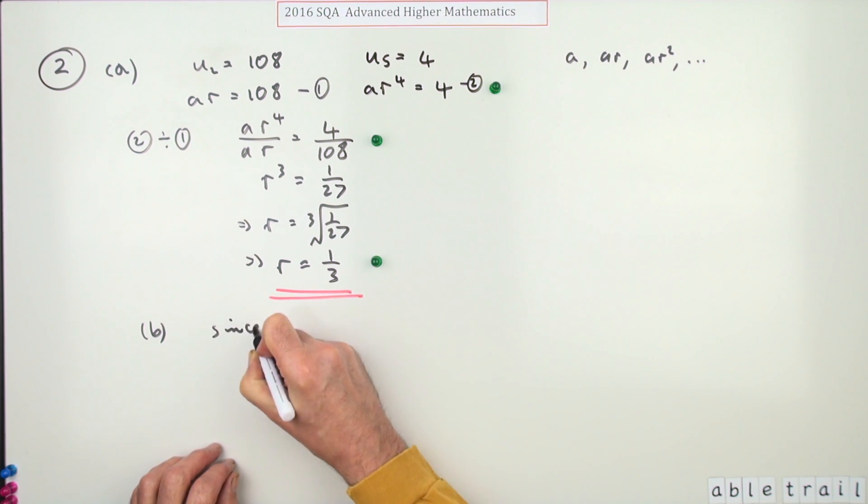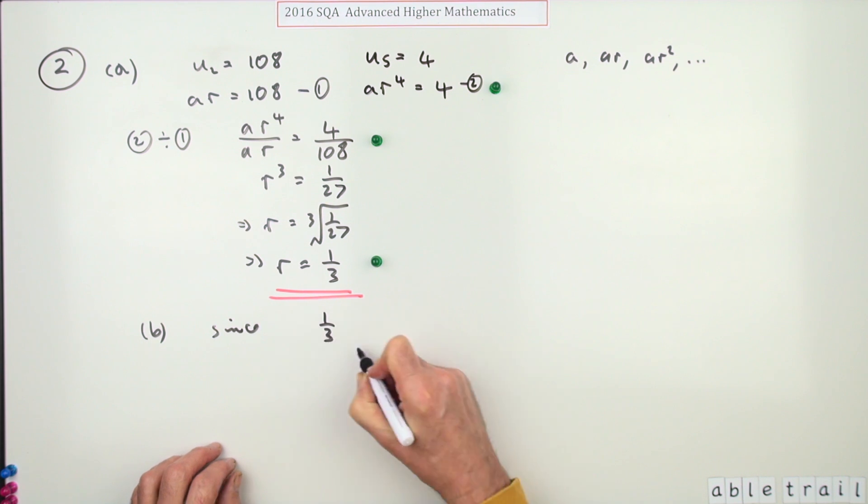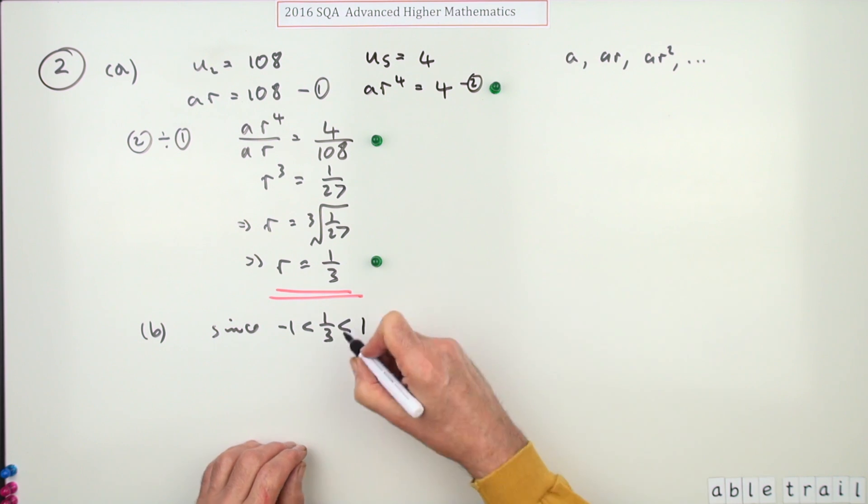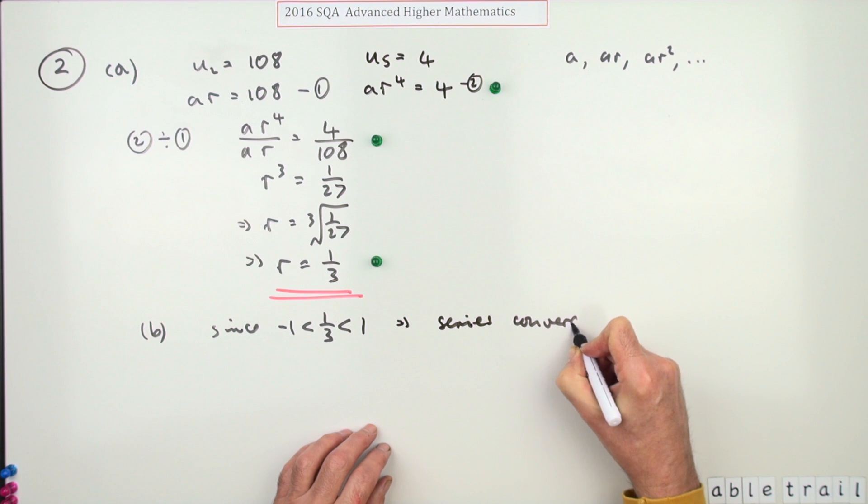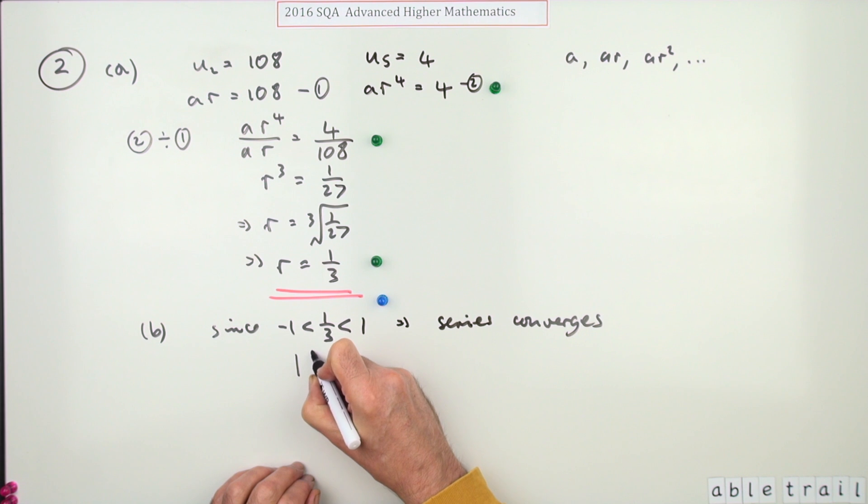You'd say this, since R, we'll give it its value, is between one and negative one, that might do on its own, according to the mark scheme, that would do, that means that the series converges. That gives you a mark. Or you might say this instead, since a third, the absolute value of a third, is less than one, the series converges.